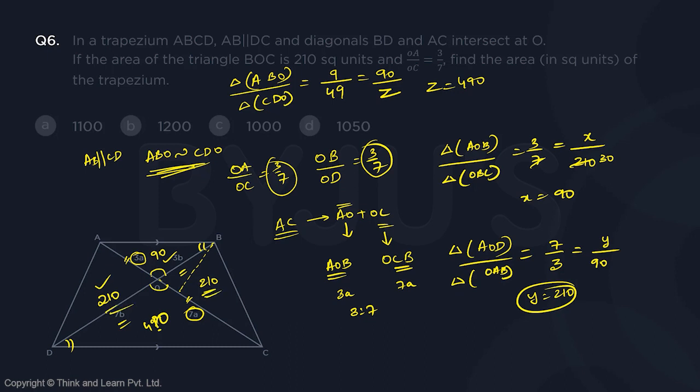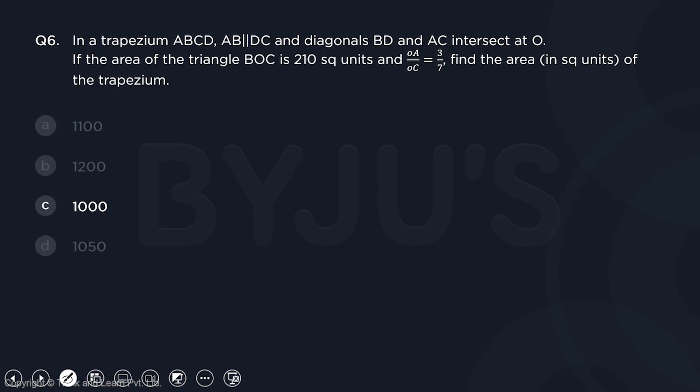So we have got all of them, 210 twice. So that is 420 and 490 and a 90. This gives you 9, 18, 20, 0, 2, 4, 8, 1000. So that is option C. Okay. So that's your option C, question number 6.